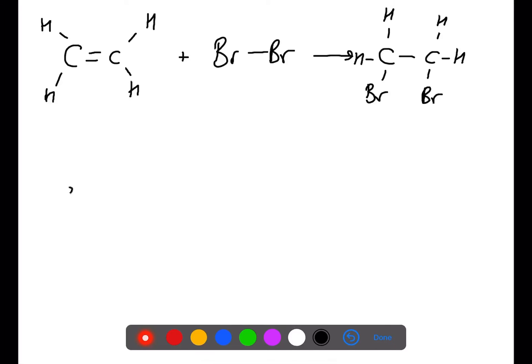When you react bromine with a saturated molecule such as ethane, there is no carbon-to-carbon double bond to break to allow bromine to add onto the molecule. This means that the bromine to bromine bond stays intact and the bromine is not decolorized.